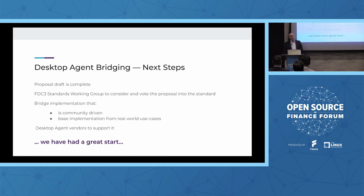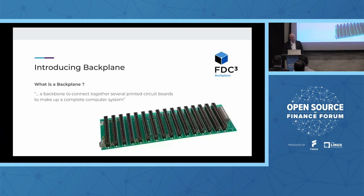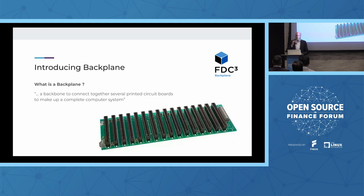At NatWest we had an implementation of a desktop agent bridge that we call Backplane, and I'm pleased to announce that we've now open-sourced that implementation and contributed it to FINOS. So we now have FDC3 Backplane. The code is in the FINOS repo — you can go and have a look at it. It's really great to get the code out there and start to build a community around it, and hopefully we can continue to evolve it in line with the standard. I'm going to give a high-level overview of Backplane and how it works.